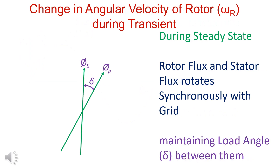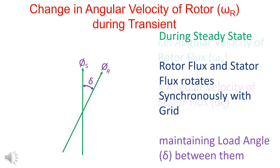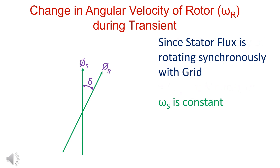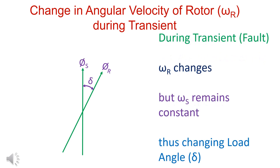At steady state, both rotor flux and stator flux rotate synchronously with the grid, maintaining load angle delta between them. The angular velocity of the rotor is equal to the angular velocity of the stator. Since stator flux is rotating synchronously with the grid, the angular velocity of the stator is constant. During a transient, only omega_r changes, thus changing the load angle delta.